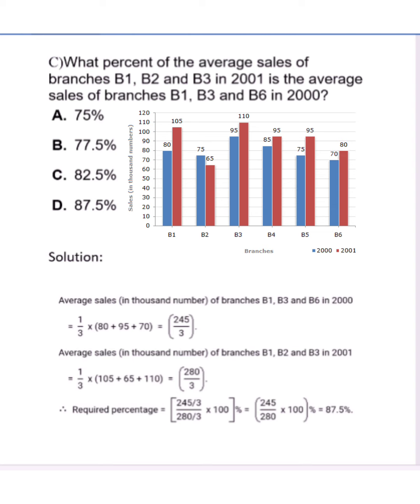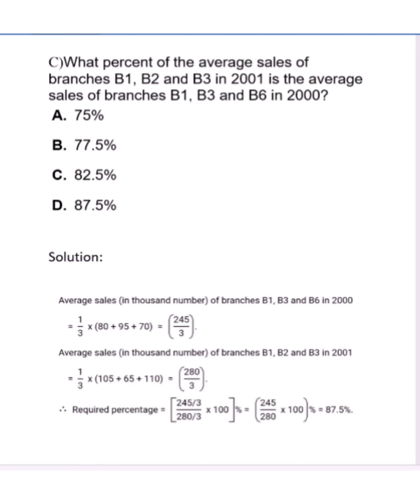Now the average sales in thousand numbers of branches for 2001 data: the values for 2001 are 105, 65, and 110, so we get 280 by 3. Now the required percent will be: we divide the first equation by the second equation, means 245 by 3 divided by 280 by 3, and for percent we multiply with 100. After solving, we get the answer as 87.5, which means the correct option is option D.